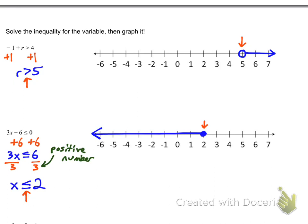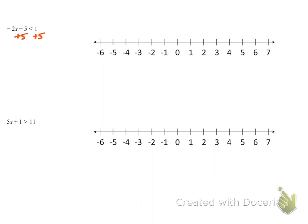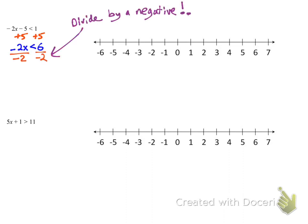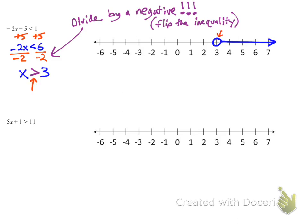Third example: add 5 to both sides and you get negative 2x is less than 6. When I divide, I'm dividing by a negative number, so I need to flip the inequality. X is greater than 3 — draw an open circle at 3 and everything to the right, since there's no 'or equal to.' Try the last one on your own and bring it into class to share with your classmates. Thanks for watching!